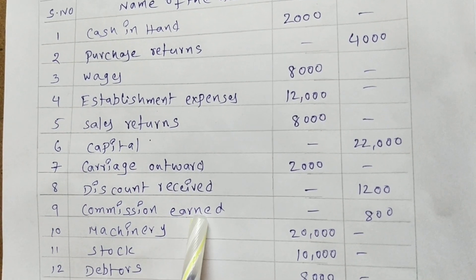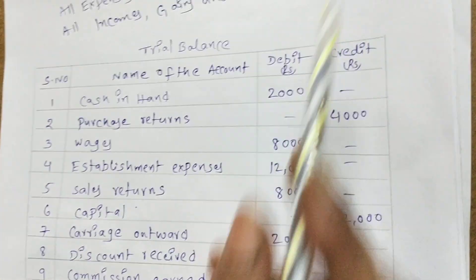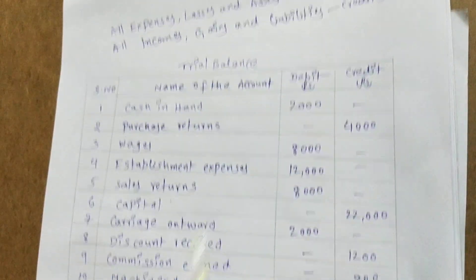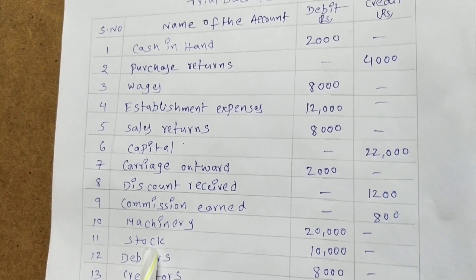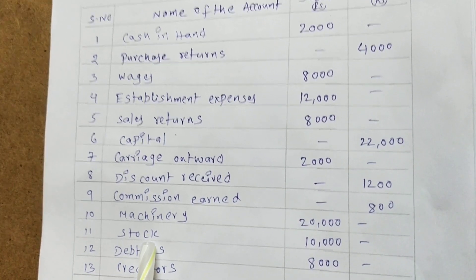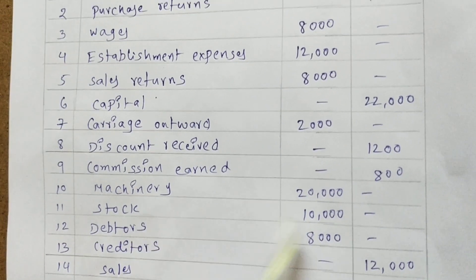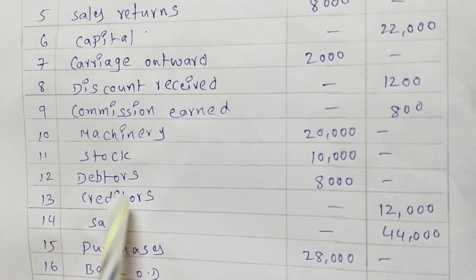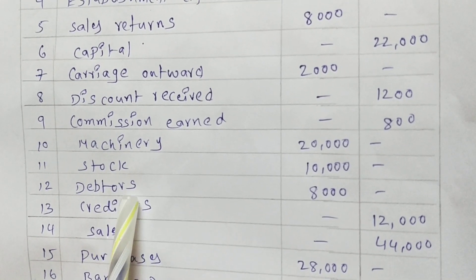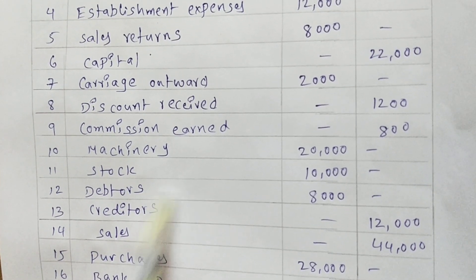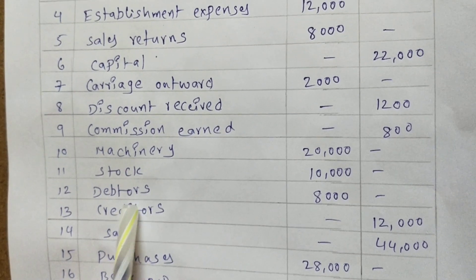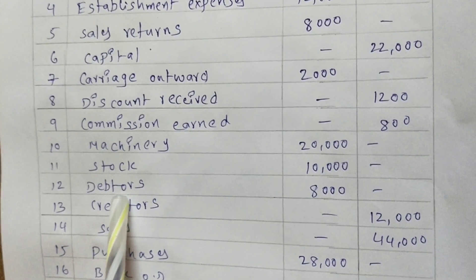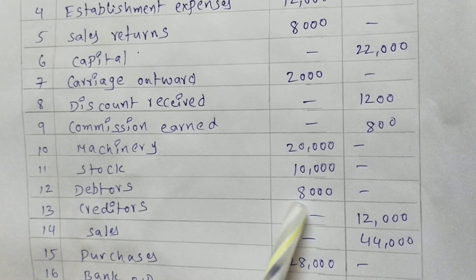Commission earned — this is also income, and all incomes go on the credit side. Machinery — machinery is an asset, all assets go on the debit side. Stock — stock is finished goods, and these are also assets, so debit side. Debtors — a debtor is the person or organization who purchased goods on a debt basis from the company. In future the company will collect that amount, so debtors are an asset — debit side.